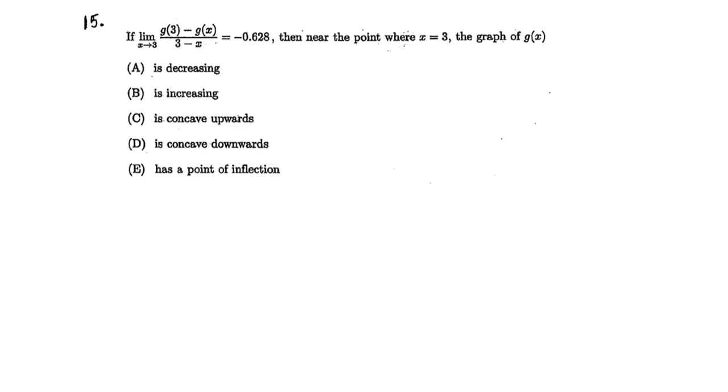Problem number 15. Here we have an equation, a limit. Limit as x approaches 3 of g of 3 minus g of x over 3 minus x equals negative 0.0628. This is a non-calculator problem. We're just interested mainly in the sign of this thing. In this case, we have negative 0.628, so that's the most important thing. And also, this is what we call in the form of a definition of a derivative.